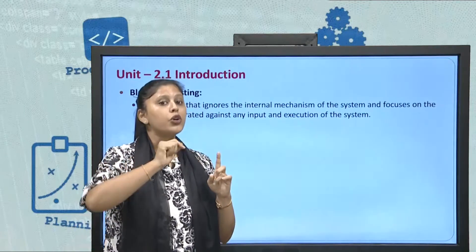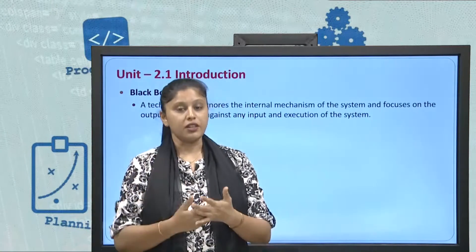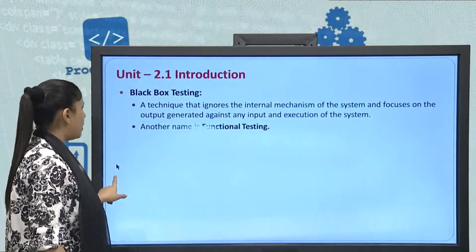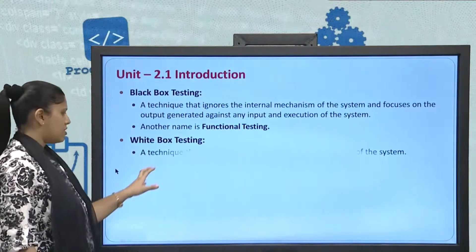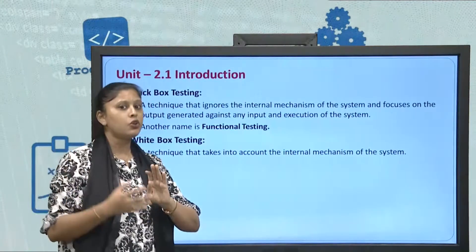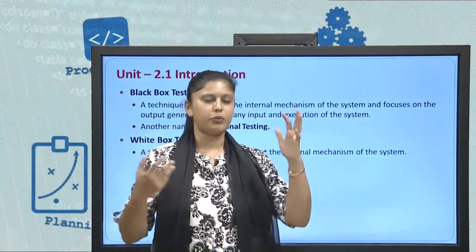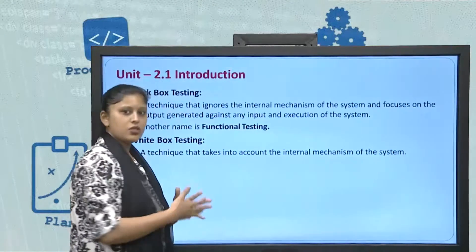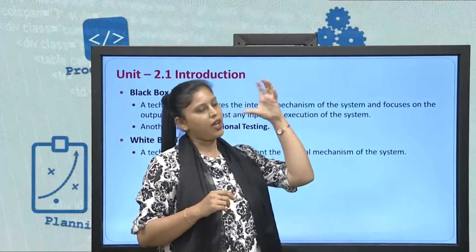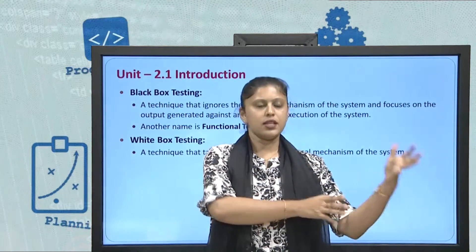Black box testing is not going to check what kind of code you have used, what branching you have done, what looping you have done, what conditional statements you have used — none of this is checked. Whatever was just described is what comes under white box testing. White box testing is a technique that takes into account the internal mechanism of the system. The internal code of your system, including the database, network communication, and the protocols used, are all checked in white box testing.